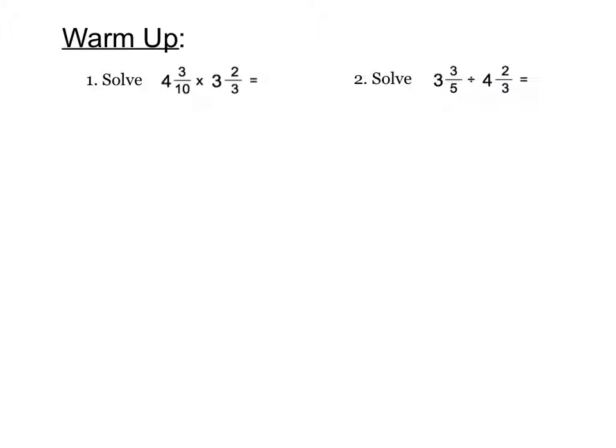Today's lesson begins with a warm-up working with multiplying and dividing fractions. Remember, our first step when we multiply or divide a fraction is to write it as an improper fraction. So 4 and 3 tenths as an improper fraction is 43 tenths times 3 and 2 thirds as an improper fraction is 11 thirds.